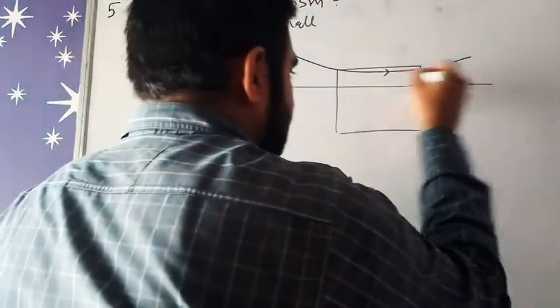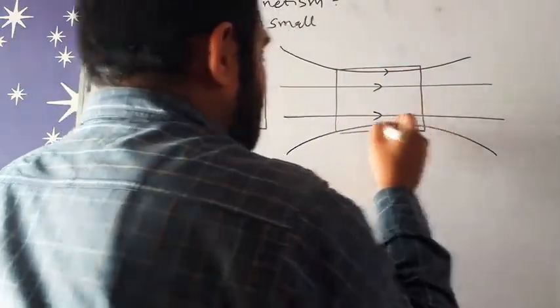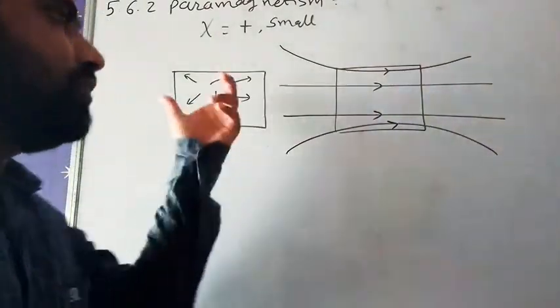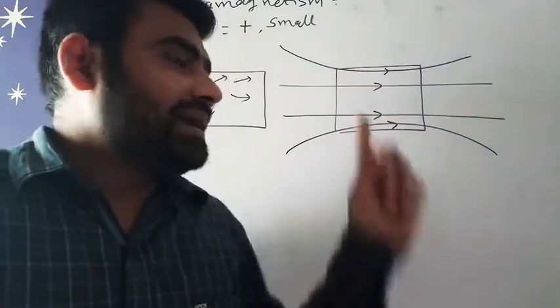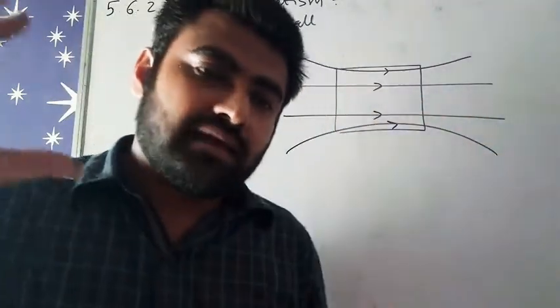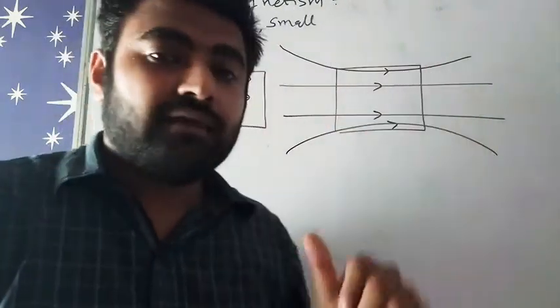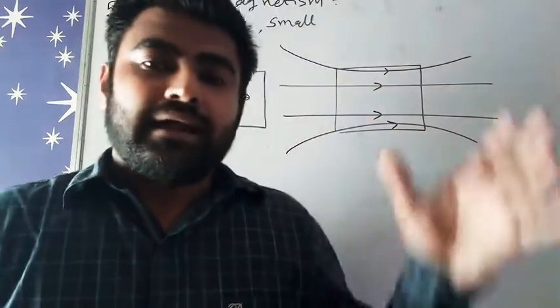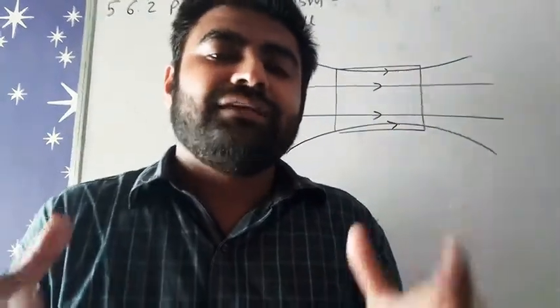When we give magnetic field externally here, after giving this magnetic field, all these magnetic dipole moments will align in the direction of magnetic field. All will come in one direction. So at this particular time, whenever we give external magnetic field, we get some amount of magnetization.